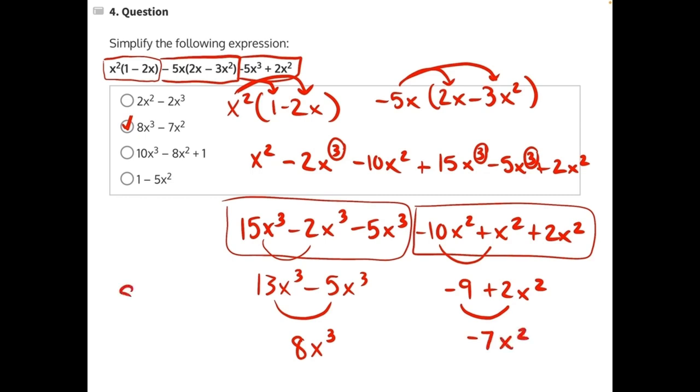So our final answer would be 8x cubed minus 7x squared, making B our correct answer.